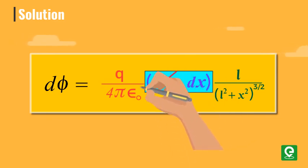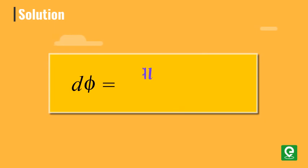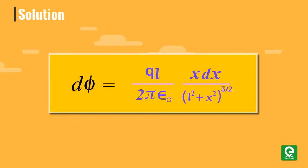Cancelling 2 pi and simplifying the expression gives us d phi equal to q l x dx divided by 2 epsilon not into l square plus x square raised to the power 3 by 2.